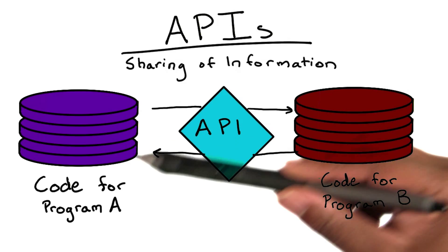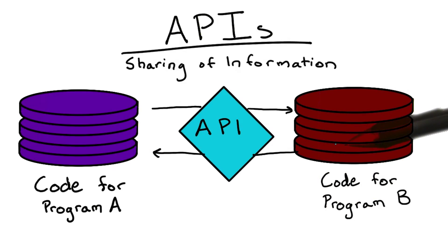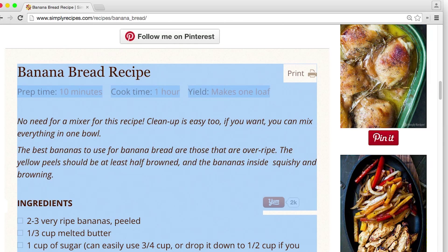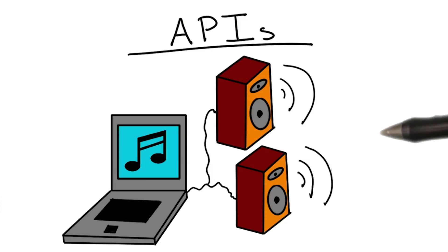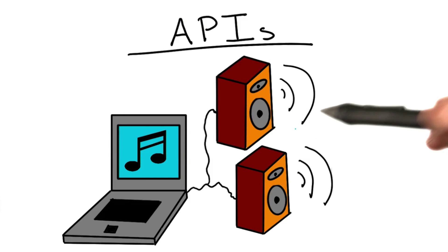You can think of APIs as connection points in code that allow one application to talk to another. When you copy code from a browser and paste it into a word processing application, an API inside your computer helped make that transfer of data happen. If you listen to music on your computer, like with iTunes or Spotify, the music playing application communicated with your operating system's API in order to send that music to your speakers.